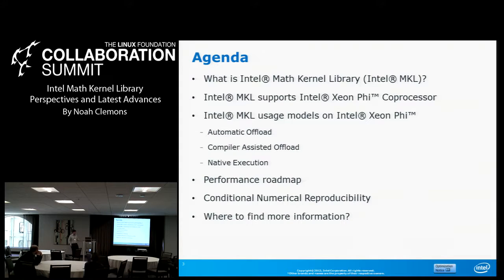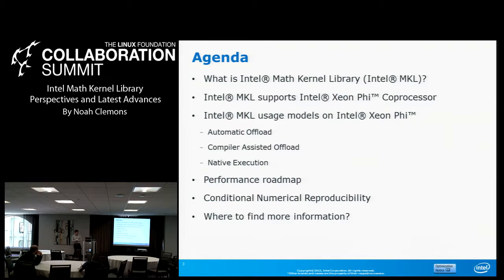If you look at all the different Intel programming models for Xeon Phi, Math Kernel Library is the only one that offers an automatic offload feature where it actually utilizes both host and coprocessor with the same function call. Of course, we also have compiler-assisted offload, and I'll explain what it means to do native execution on Xeon Phi, particularly with Math Kernel Library. I'll explain some performance differences — which things we've spent a lot of time optimizing and which things less. Then we'll talk about a feature called conditional numerical reproducibility. Let me get a show of hands: how many of you have experienced run-to-run non-reproducible results?